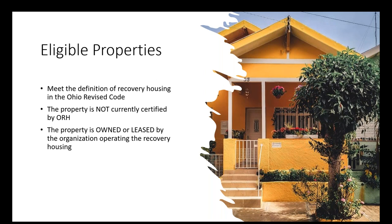Eligible properties must meet the definition of recovery housing in the Ohio Revised Code, and the property must not be currently certified by Ohio Recovery Housing. The intention of these funds is to increase the number of certified properties in the state and increase access to certified recovery housing. Only uncertified properties are eligible. Starting July 1st, 2023, both owners and lessees may apply, though eligible uses vary depending on ownership status.